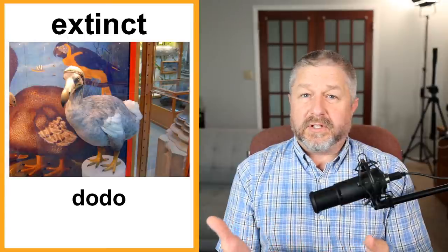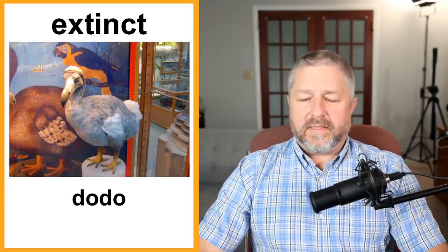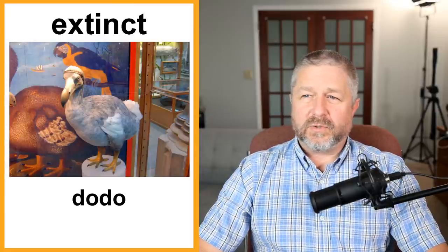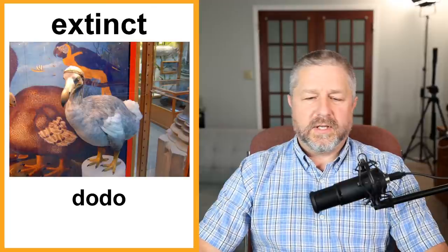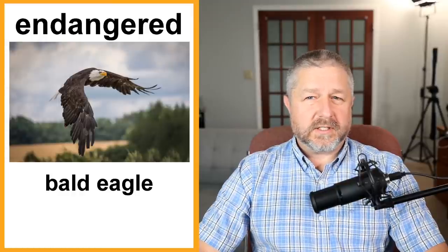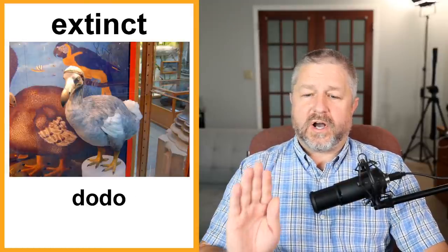Extinct. There are animals that have gone extinct. The dodo is one example — I think it lived on the island of Mauritius. It didn't have the ability to fly, so it was very easy to hunt and eat them, and eventually they went extinct for a number of reasons: they were hunted a lot, and I think diseases were involved. When an animal no longer exists on the planet, we say it is extinct. It's nice when we work hard as humans to stop animals from going extinct.